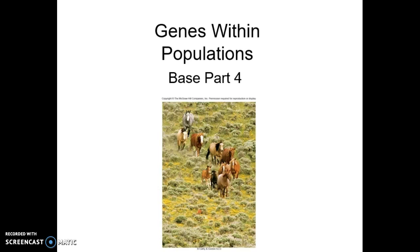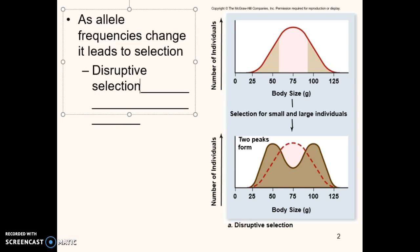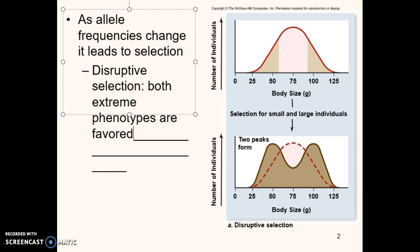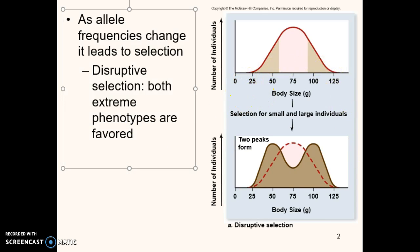Make sure you know those five agents and the examples of them. As populations are changing, they go through selection. The first type we talked about in the last lecture was disruptive selection. Disruptive selection is when both extreme phenotypes are favored — the really, really big and the really, really small, whatever the trait is. The ends of the spectrum are favored over generations.